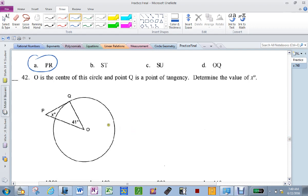O is the center of the circle. Makes that 90. Makes that 90 minus 41, which is 30.